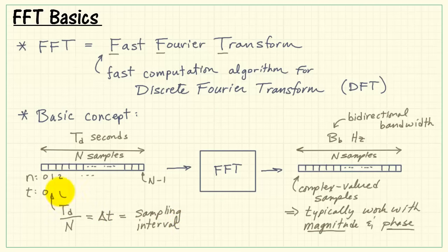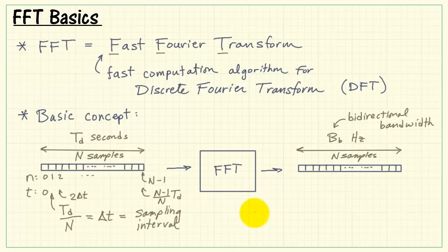Now, back in time, we would have 0, delta t, 2 delta t, 3 delta t, and so on, up to the maximum value, which would be n minus 1 times delta t. Or we could rewrite this as n minus 1 over n times t sub d, the total duration of the time waveform.